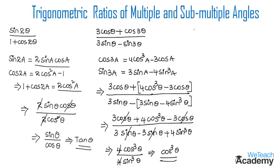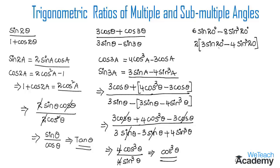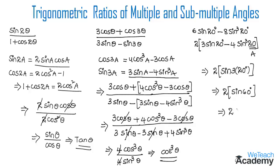The next example is to find the value of 6sin20° − 8sin³20°. Taking 2 as a common factor gives 2(3sin20° − 4sin³20°). This matches the formula sin3a = 3 sin a − 4sin³a, with a = 20°. Applying the formula gives 2·sin60°. Substituting sin60° = √3/2, the 2 cancels and the result is √3.